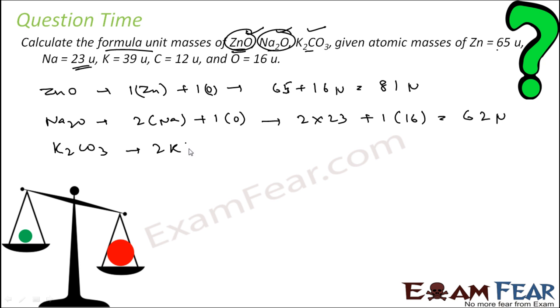K2CO3. Two potassium, one carbon, three oxygen. Right? Two potassium, one carbon, three oxygen. Let's put the values. Two into potassium is 39. Plus one into carbon is 12. Plus three into oxygen. Oxygen is 16. So it is 48. Plus 12, 60. Plus 78, 138 unit. Pretty easy.